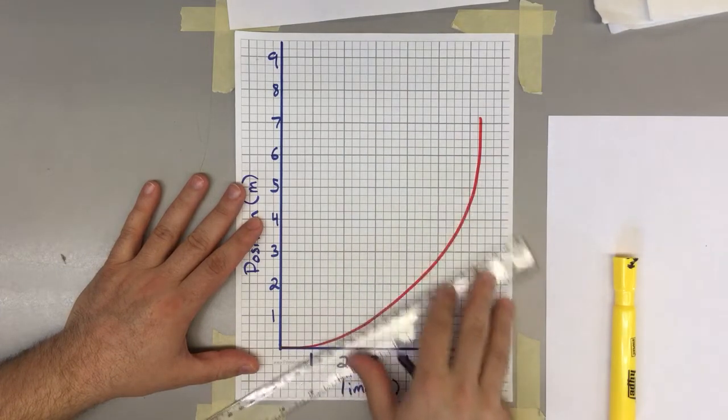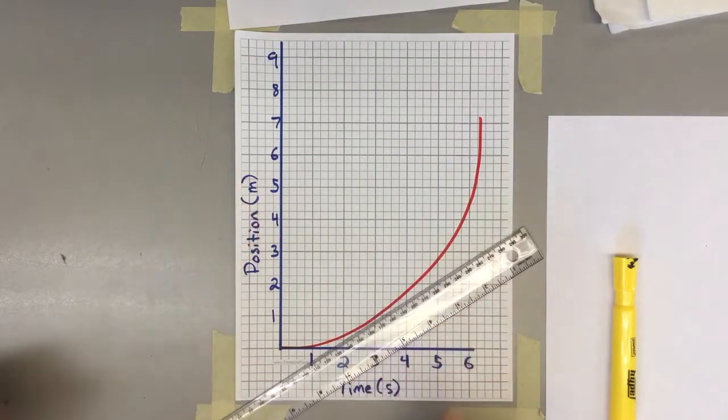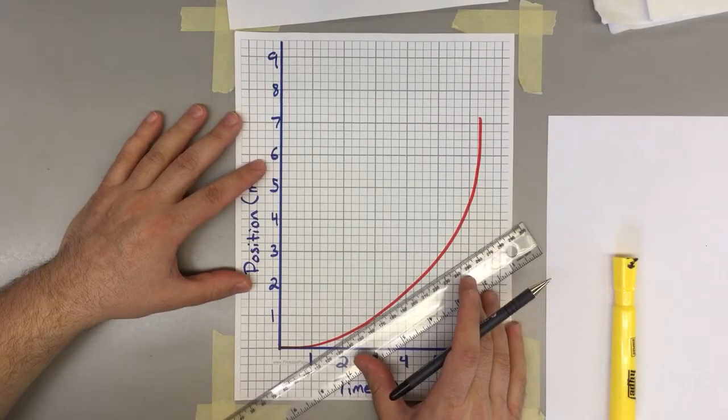You have to take a ruler. I know rulers, we don't always have them. Get one. It's going to make your life better. It's going to make your lines better.